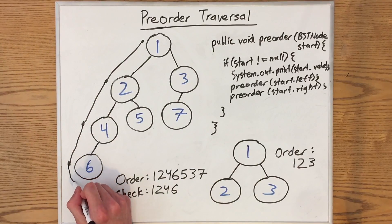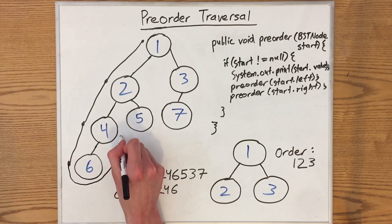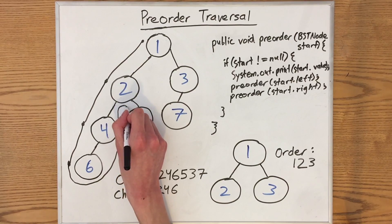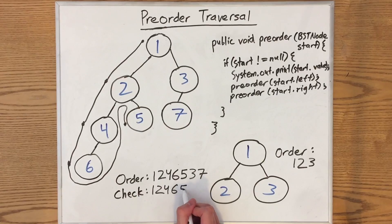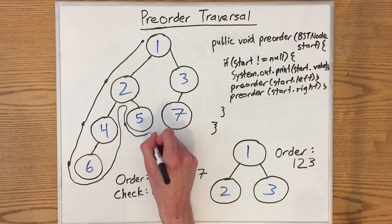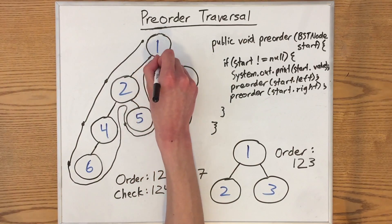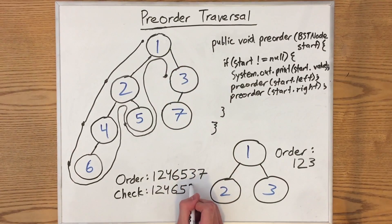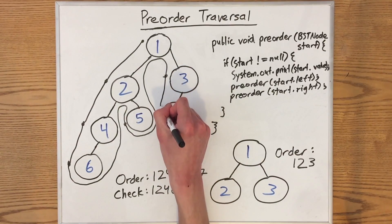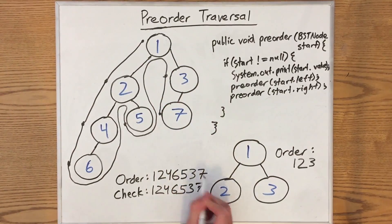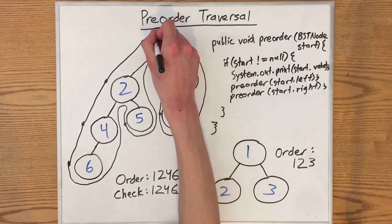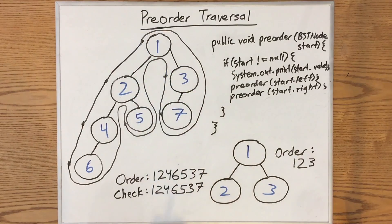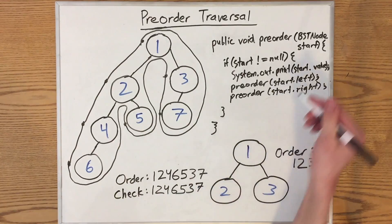Then once we reach the bottom of the tree, we go up again as far as possible. Once we reach as far up as we can go, we go down again. Looks like we're friends with 5 too, so we print that out. Then we wrap around, then we start going down again, so we print out 3. Finally, we print out 7. There are no more nodes that we'll pass by on the left.